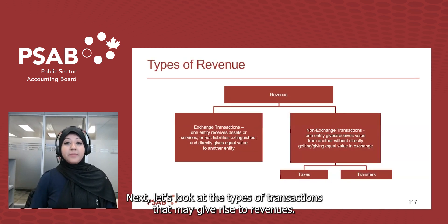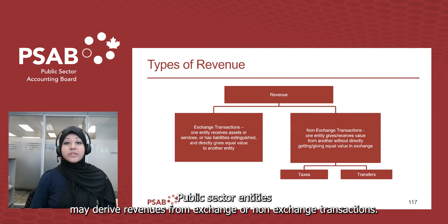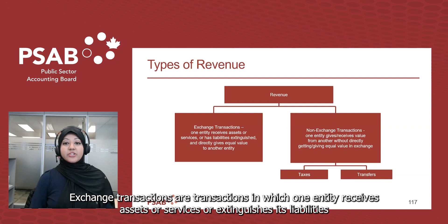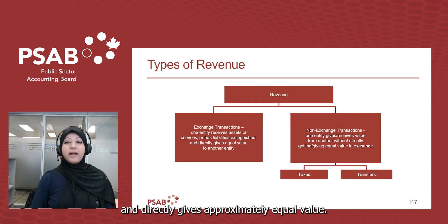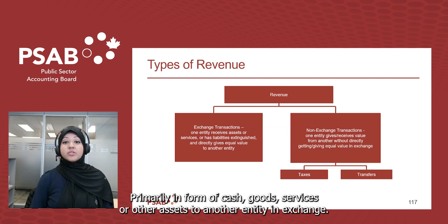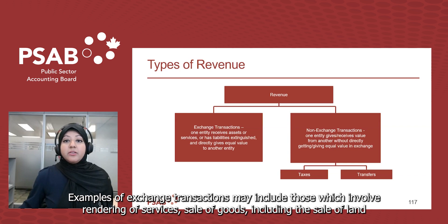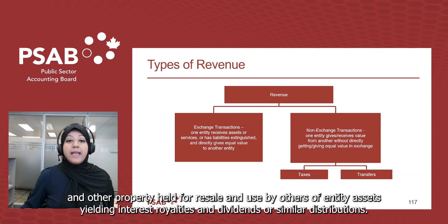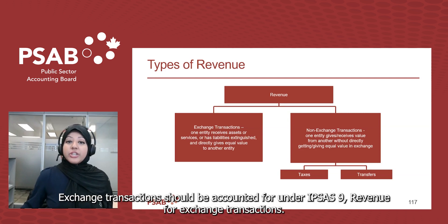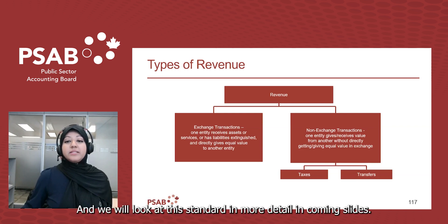Next, let's look at the types of transactions that may give rise to revenues. Public sector entities may derive revenues from exchange or non-exchange transactions. Exchange transactions are transactions in which one entity receives assets or services or extinguishes its liabilities and directly gives approximately equal value, primarily in the form of cash, goods, services, or other assets to another entity in exchange. Examples include rendering of services, sale of goods including land and other property held for resale, and use by others of entity assets yielding interest, royalties, and dividends. Exchange transactions should be accounted for under IPSAS 9.